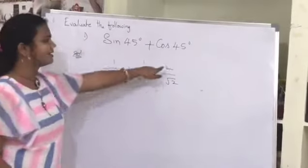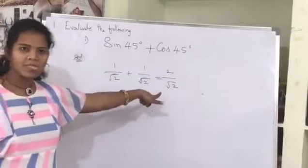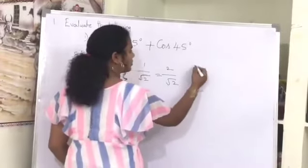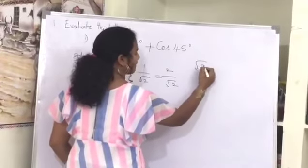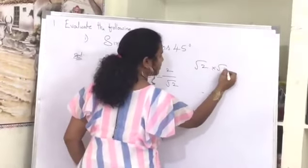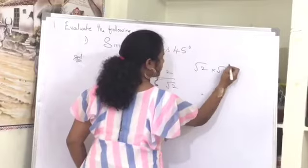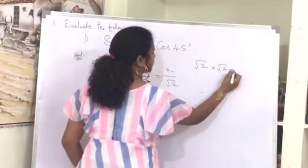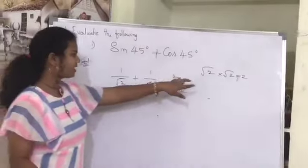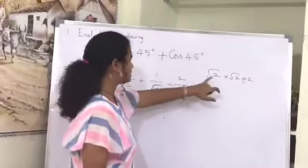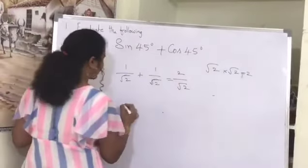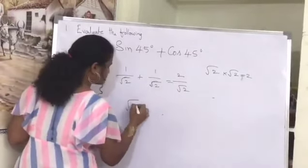We can write 2 as root 2 into root 2. So 2 by root 2 becomes root 2 into root 2 by root 2.